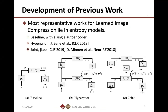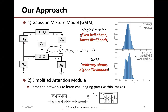Typically, previous works like Hyperprior and Joint use a single Gaussian model for rate estimation, but these entropy models are not accurate enough. Our approach generalizes the single Gaussian model with fixed bell shape and lower likelihoods to Gaussian mixture models with arbitrary shape and higher likelihoods.